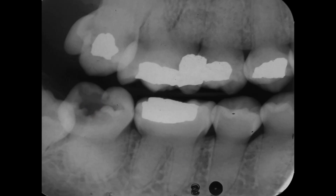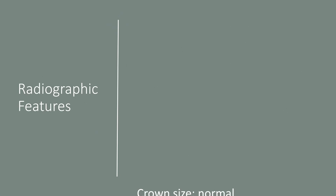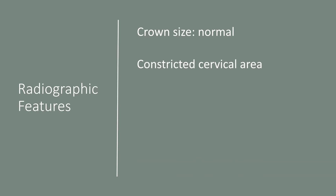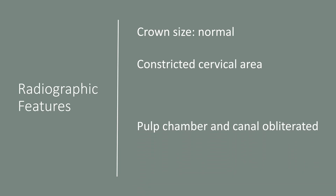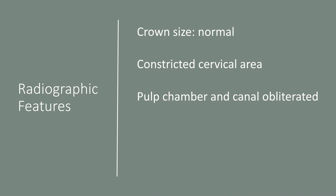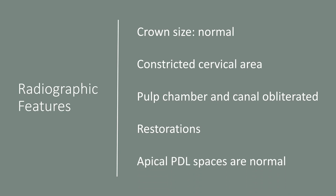So in review, these are the radiographic features that we saw. We saw that the crown size was normal. We saw that the cervical area was constricted. We did not see any pulp chamber or pulp canals. Almost all the teeth had some kind of restorations. The apical periodontal spaces were normal. So these are the common radiographic features of dentinogenesis imperfecta.